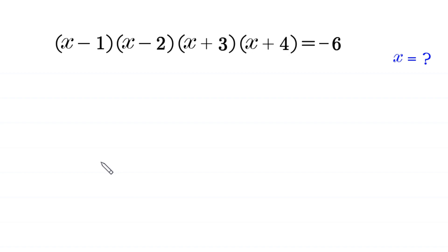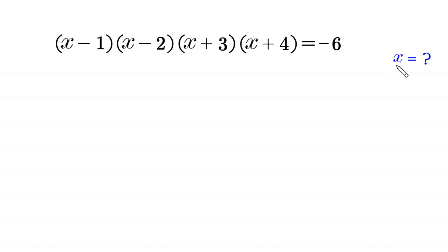Hello, welcome to how to solve this very nice algebra equation. x minus 1 times x minus 2 times x plus 3 times x plus 4 is equal to negative 6. We need to find all possible values of x. So, let us start.